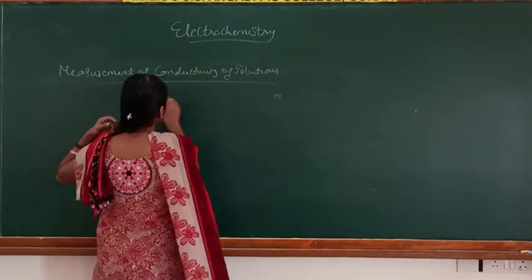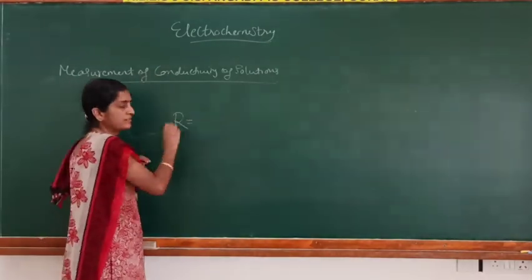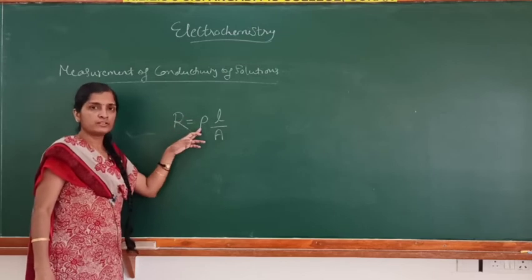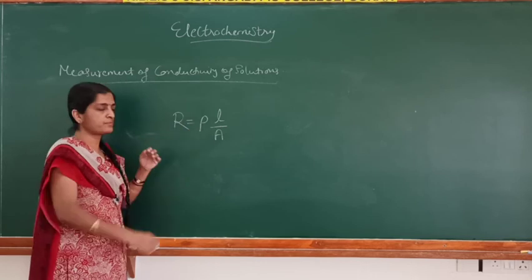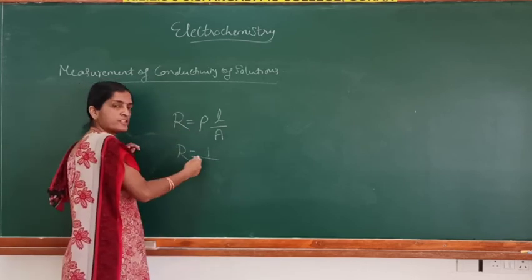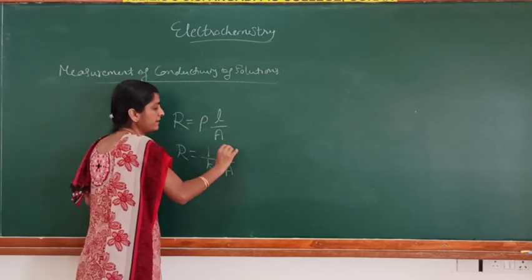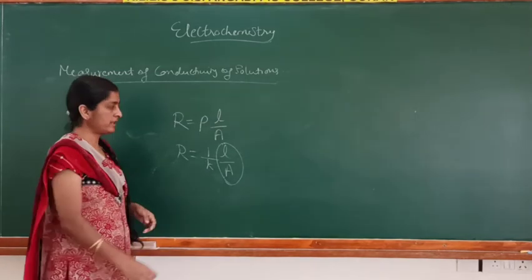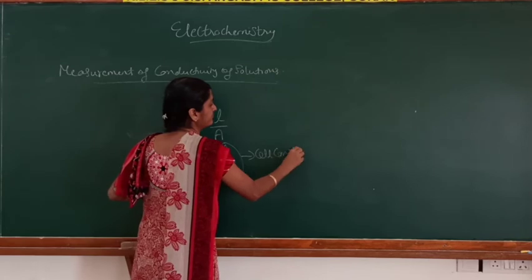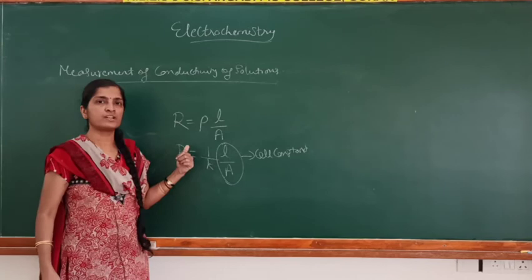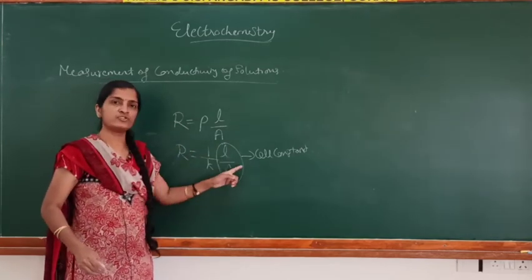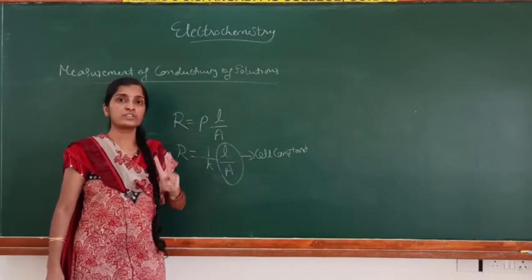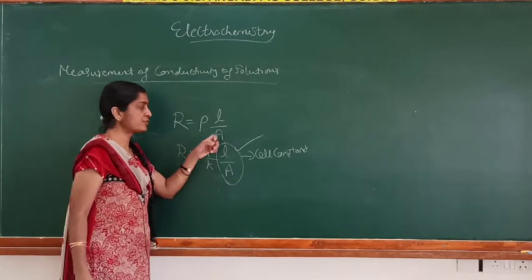The resistance of the ionic solution follows R equals rho times L divided by A, or equivalently R equals 1 divided by kappa, times L divided by A. The quantity L divided by A is known as the cell constant, because the distance between electrodes and their area of cross section remains constant. This cell constant is also denoted as G*.